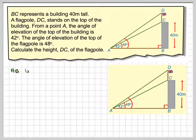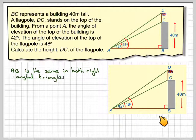The thing that is common to both of these triangles that we're going to use is AB, which is in both triangles. So we're going to use this idea to find first AB, and then we're going to find DB and then be able to subtract DB minus CB, which is already 40, to find the height of the flagpole.